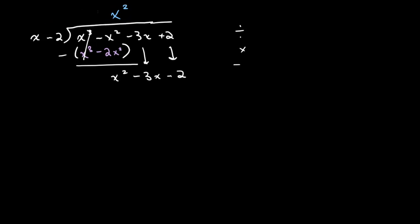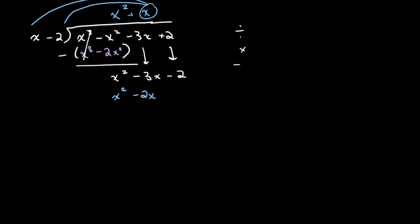Now we follow that same exact process again. We take x squared and divide it by x, which gives us x. So we have plus x in our answer. Then we multiply x by x minus 2, which gives us x squared minus 2x. We subtract these two values, the x squared terms cancel out, and minus 3x minus negative 2x gives us minus x plus 2.